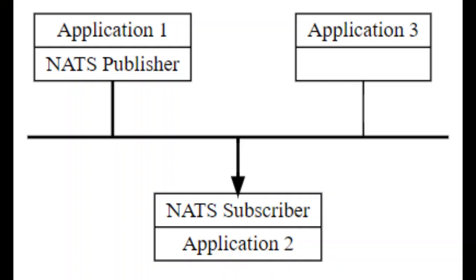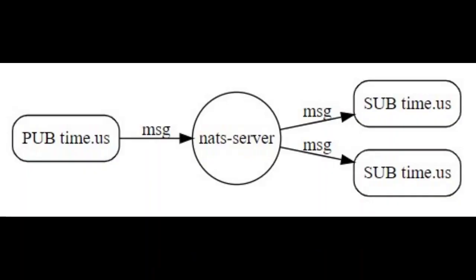So what is NATS? NATS describes itself as message-oriented middleware. What that means is when you have two computer systems — system A and system B — they need to send messages or information to each other. NATS sits in the middle and enables that communication. It does so based on subjects, so a publisher will publish a message to a particular subject and then one or more systems can listen on that subject and receive those messages.